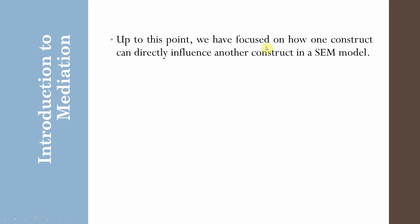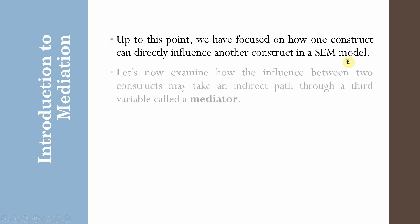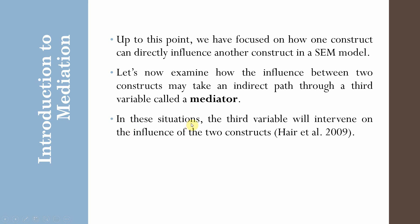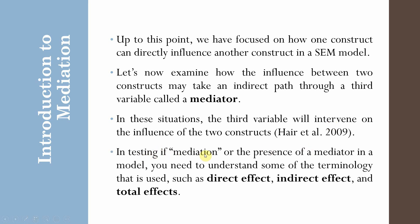Up to this point, we have focused on one construct that directly influences another construct in a SEM model. Let's now examine how the influence of two constructs may take an indirect path through a third variable, which we can call a mediator. In these situations, the third variable will actually intervene on the influence between the two constructs. That's why a mediating variable is also referred to as an intervening variable. In testing for mediation or the presence of a mediator in a model, you will need to understand some key terminologies: direct effect, indirect effect, and total effects.